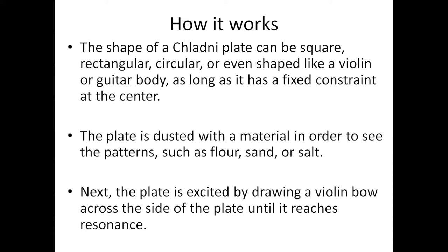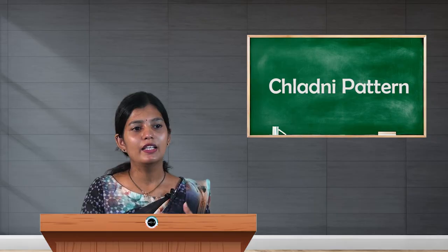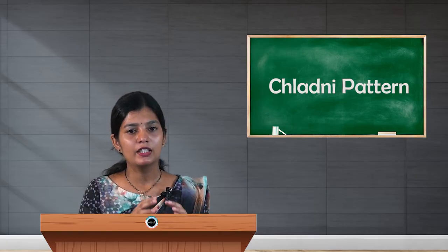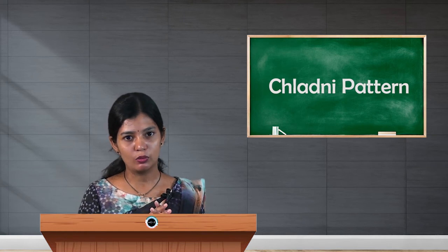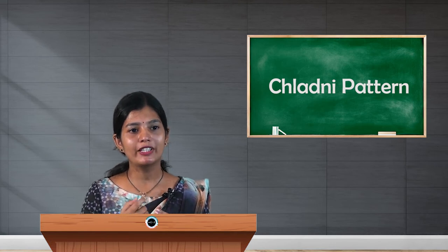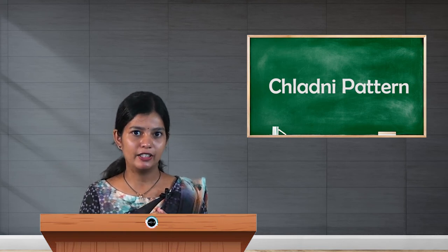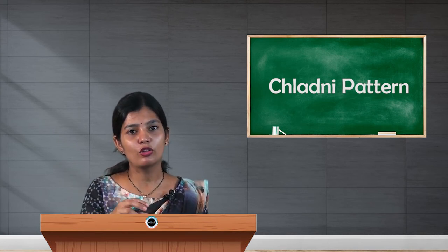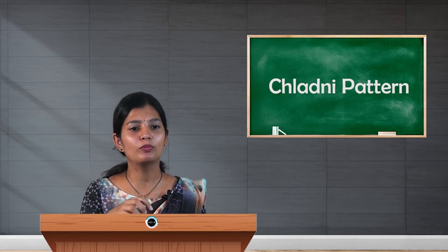To visualize the patterns, sand, flour, or even salt is sprinkled on the plate. The plate is then excited by drawing a violin bow across its side until it reaches resonance. Every plate has its own natural frequency, and when the violin bow's frequency matches that of the plate, resonance occurs. The plate vibrates with greater amplitude and Chladni patterns are formed.